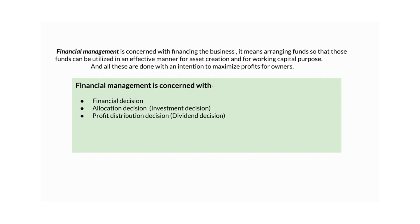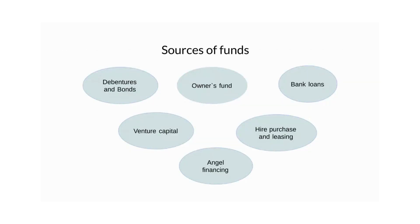Now let us discuss the sources of funds. A company can issue debentures and bonds — if it is a public sector unit, it can also issue bonds. We can also issue equity share capital. The company can also take a bank loan. Additionally, the company can opt for hire purchase and leasing, using machinery in that manner.